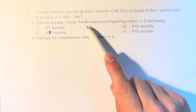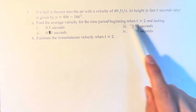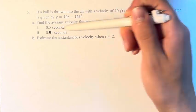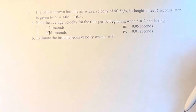We're asked to find the average velocity for the time period beginning when t equals 2 and lasting 0.5, 0.1, 0.05, and 0.01 seconds.